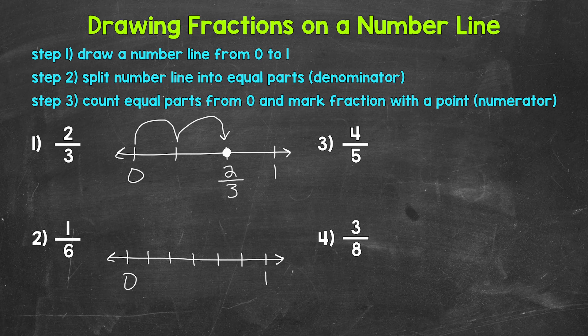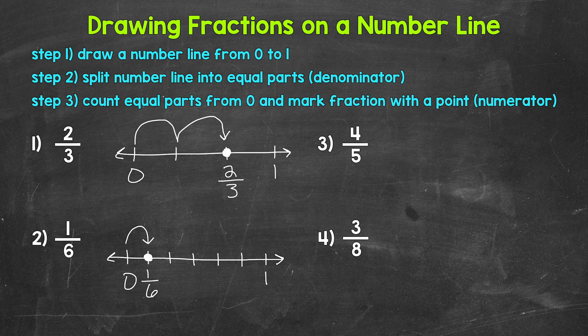The distance between zero and one is now divided into six equal parts. We need to count and go over one — that's our numerator. So we count one equal part and mark our fraction. This is one sixth. The distance between zero and one was divided into six equal parts, and we went over one out of those six equal parts to represent one sixth.